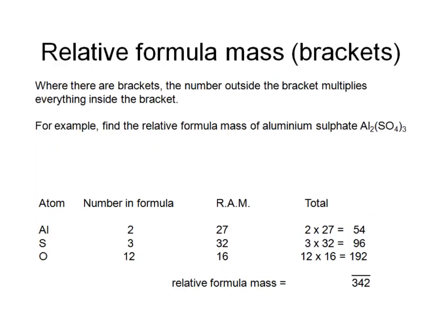Sometimes we have to cope with a formula with brackets, where the number outside the bracket multiplies everything inside it by that number. Looking at aluminium sulphate: the 2 refers only to aluminium, so there are two aluminiums — two lots of 27 which weighs 54. There are three sulphurs — three times 32 gives 96. There are four oxygens in the bracket multiplied by three outside, giving 12 oxygens — 12 lots of 16 is 192. Adding these up gives a relative formula mass of 342.